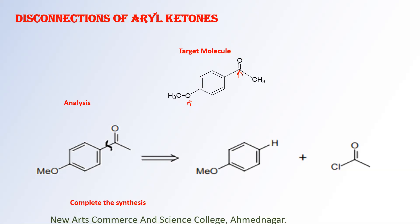Now the carbonyl group is there. The specific question you have to ask: is the carbonyl attached to the aromatic carbon or not? This is an aromatic carbon and this one is the aliphatic carbon. Here, the carbonyl carbon is attached to the aromatic carbon. Whenever that situation is there — a carbonyl keto group attached to the aromatic carbon — the best retro reaction is retro Friedel-Craft acylation reaction.